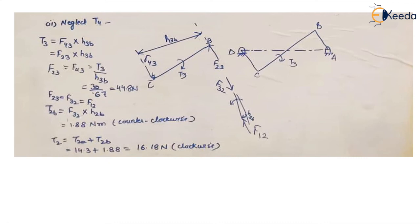Now in the second part, we neglect T4 and consider only T3 acting on the system. We draw a new set of free body diagrams. For body 3, since the torque T3 is applied in the clockwise direction, there must be a system of forces producing a couple in the counterclockwise direction. So this will be the direction of the two forces F43 and F23. We calculate the perpendicular distance H3B — the perpendicular distance between the lines of action of these two forces — by measurement.